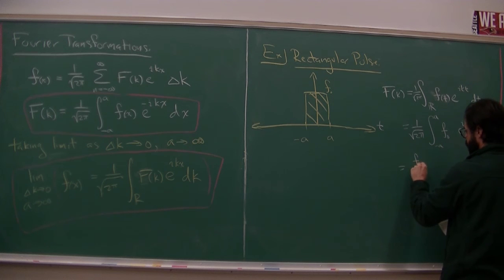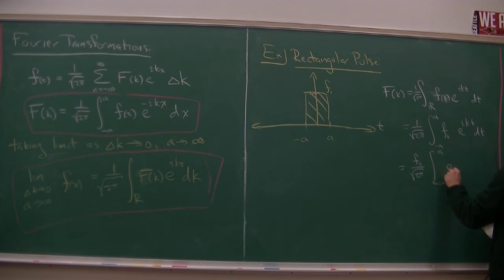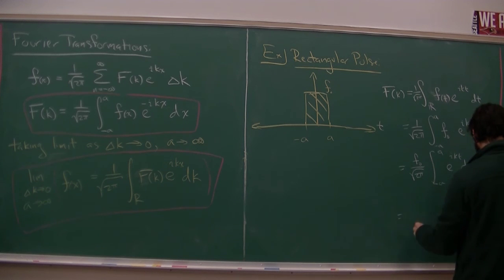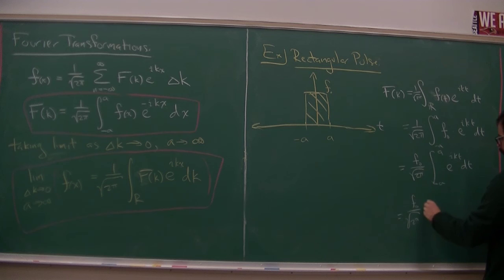I can do that. So, pull the f0 out. I is complex, but it's still just a number. And so I plug this in. And what I get is f0 over root two pi. I get a one over i k, but one over i is minus i. And then we have e to the i k a minus e to the minus i k a.